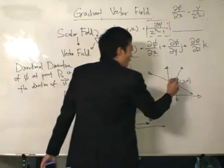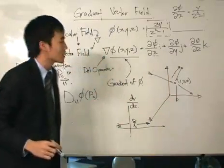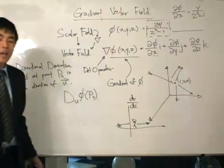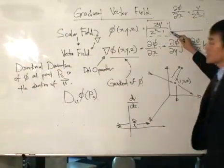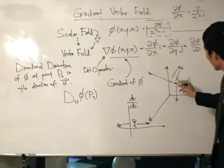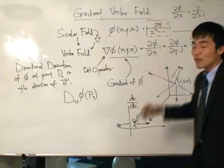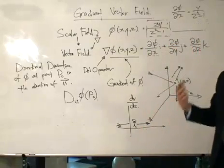For example, if I travel from here to here in this direction in three-dimensional space, my rate of change may not be that high, meaning to say this value wouldn't increase as fast as supposed to if I were to travel in this direction where this value will increase at a much faster rate.